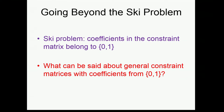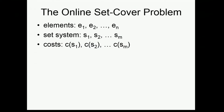Let's go beyond the ski problem. In the ski problem, all entries of the constraint matrix are 0 or 1 with a very special structure. For a general 0-1 matrix, this is exactly an instance of the set cover problem. So let's talk about the online set cover problem.